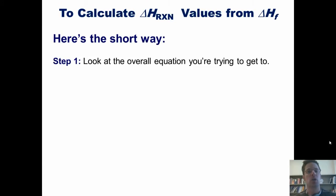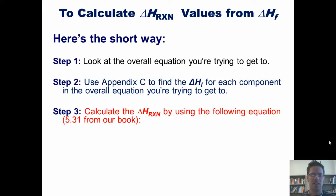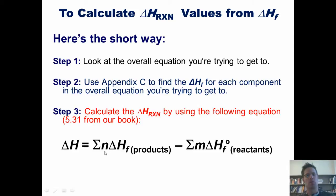Now that you've seen that lecture footage, I'm going to show you the short way. Here are the steps. Step 1: look at the overall equation you're trying to get to. Step 2: use Appendix C to find the enthalpy values of formation, delta HFs, for each component in the overall equation. Step 3: calculate the overall enthalpy of reaction, delta H reaction, using the equation from our book — the overall enthalpy of reaction equals the sum of the individual enthalpies of formation for the products, minus the sum of the individual enthalpies of formation of the reactants, each multiplied by their respective coefficients.